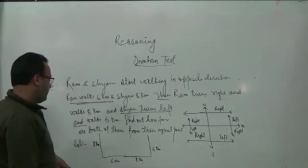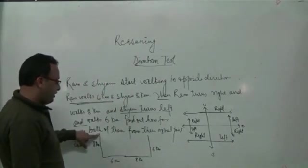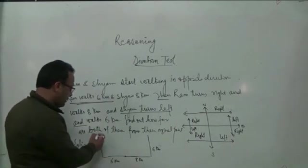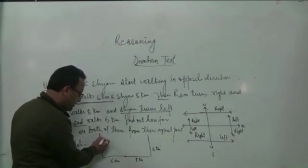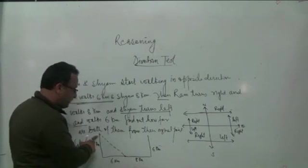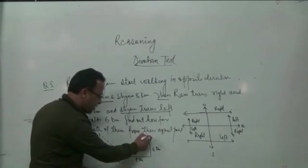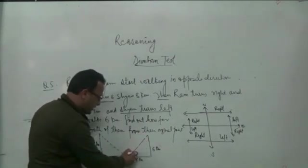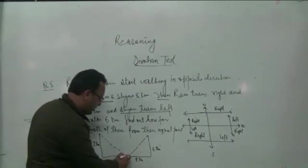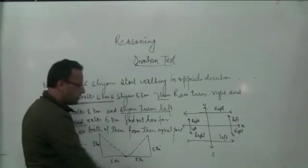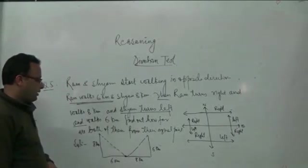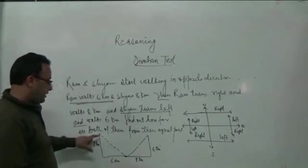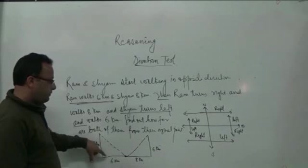We have been asked what the distance is from the original point. So this is the point where Ram is. This is the point where Shyam is. So we need to find the distance from the original points. We need to solve it with Pythagoras theorem.